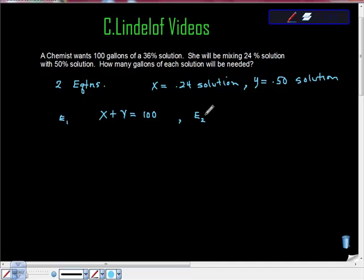I'm just going to make my second equation over here, call it E2. The 24% solution plus 50% solution has to equal 36%, and it has to be 100 gallons total, right?